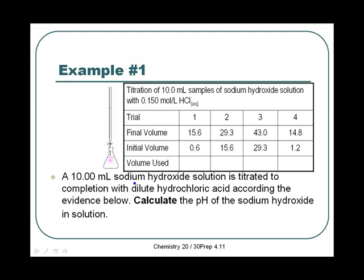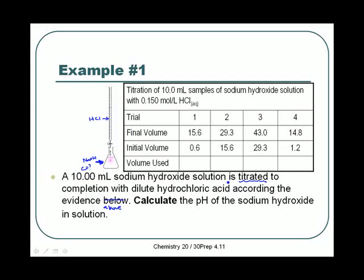Here we have a 10 milliliter sodium hydroxide solution titrated to completion with dilute hydrochloric acid. We need to calculate the pH of the sodium hydroxide solution. In our data table we have 10 milliliter samples of sodium hydroxide — so NaOH is what's in the flask and we don't know its concentration. In the burette is our hydrochloric acid — it's our titrant — and it's being added to the sodium hydroxide.